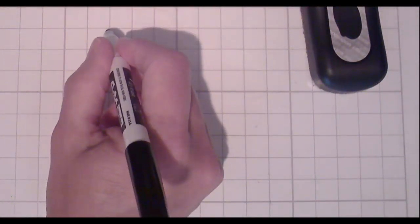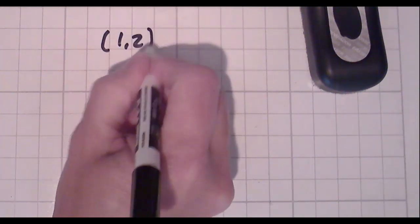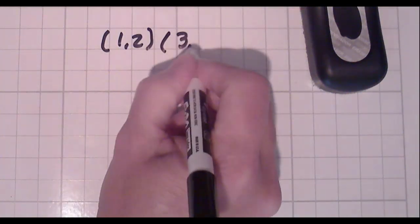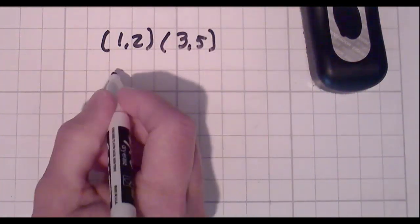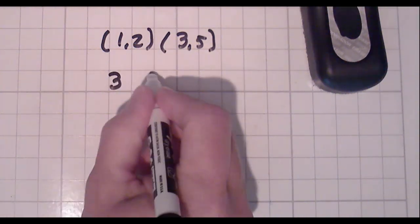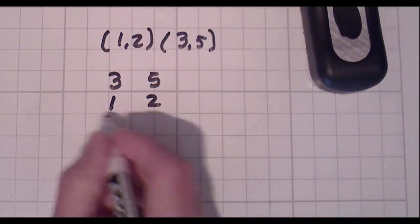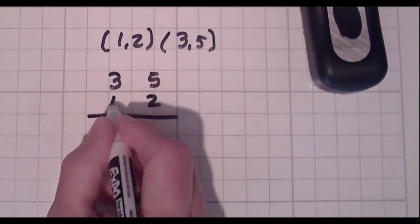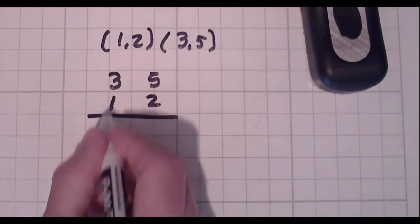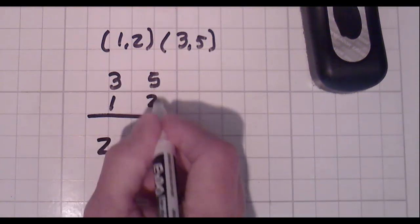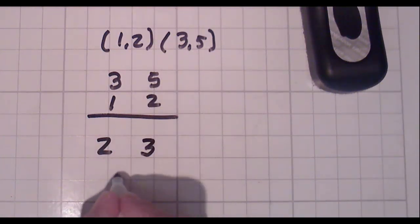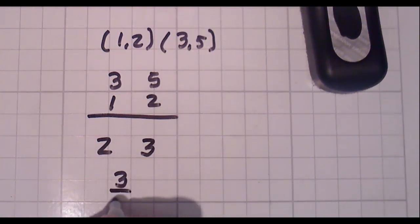Let's do another one. You'll see this works 100% of the time. Next set of points: 1, 2, and 3, 5. Again, take a set of points. It doesn't matter which. 3, 5, and 1, 2. Draw your line. Top number minus bottom number, so 3 minus 1. 5 minus 2. Second number divided by first number. There's your slope.